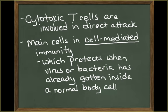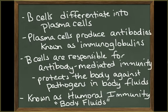There are other types of T cells than these four, but we won't focus on them in this segment. B cells are cells that can differentiate into cells called plasma cells that secrete antibodies. These antibodies are proteins known as immunoglobulins. The B cells are responsible for antibody-mediated immunity, which protects the body when a pathogen is in the body fluids, such as the interstitial fluids and the plasma. This antibody-mediated immunity is known as humoral immunity.